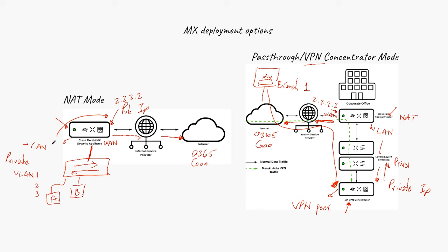NAT mode manages the public IP address, translating traffic from the LAN devices to the internet. Pass-through or VPN concentrator mode does none of that — it simply holds a private IP address and terminates all the VPN tunnels from other locations to send traffic to the internal corporate office.